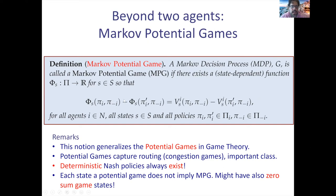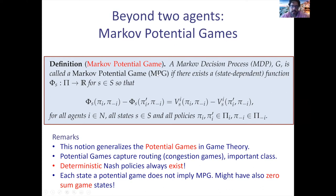Suppose there exists such a function φ so that: if agent i decides to deviate and change his policy from πᵢ to πᵢ', while the other agents remain fixed, the difference in the value of the potential is equal to the difference in the utility of player i when he switches his policy from πᵢ to πᵢ'. The remaining agents keep their policy fixed, and one player deviates.